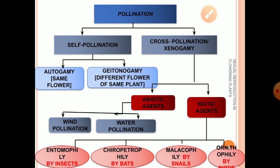For autogamy, one condition is required: the maturation and release of pollen must occur at the same time as stigma receptivity. These two events must be synchronized — they must take place simultaneously. This synchronization is a must for autogamy to occur.